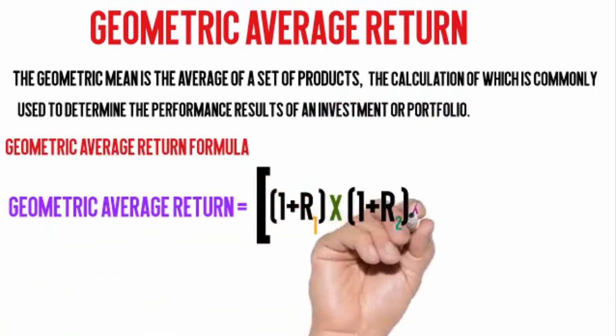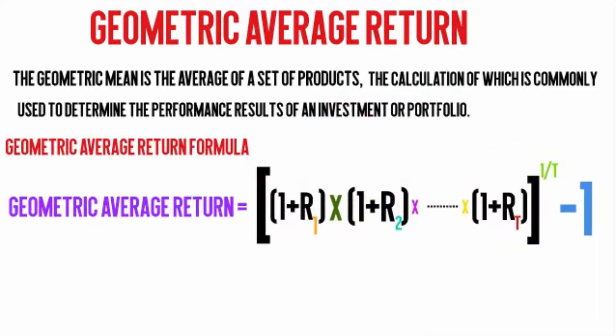In general, if we have t years of returns, the geometric average return over these t years is calculated using this formula.